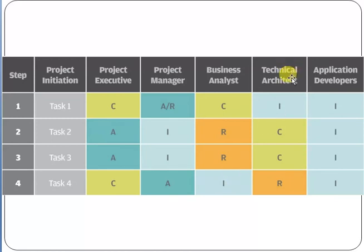Similarly, the Technical Architect is Responsible for Task 4. The Application Developer is Informed for Tasks 1 through 4. This is a simple example of the RACI matrix. You can create your own RACI matrix according to this chart — it will help you identify roles in your project and define responsibilities accordingly.